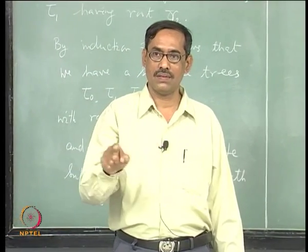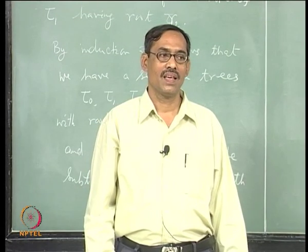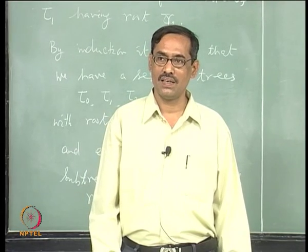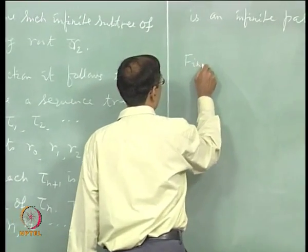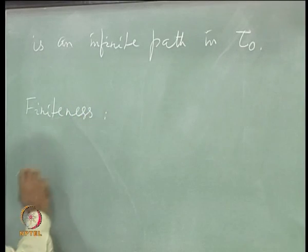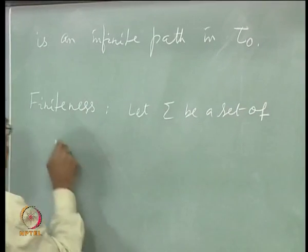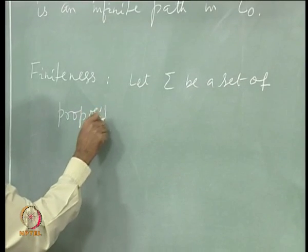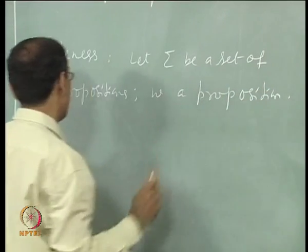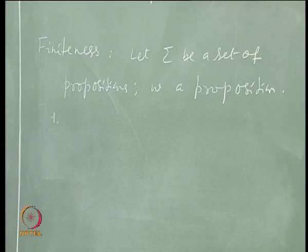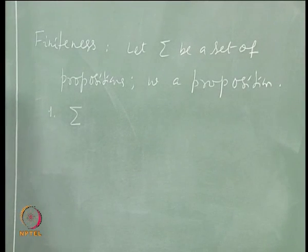Each one follows in a proof — here it may follow or it may not follow; one proposition is coming. So you have to find some relation between them, a similar relation to connect with the semantics also. First, let us see the finiteness theorem. Finiteness says that: let Σ be a set of propositions and W a proposition. We will have two formulations. We take: if Σ is inconsistent, then it has a finite subset which is inconsistent.